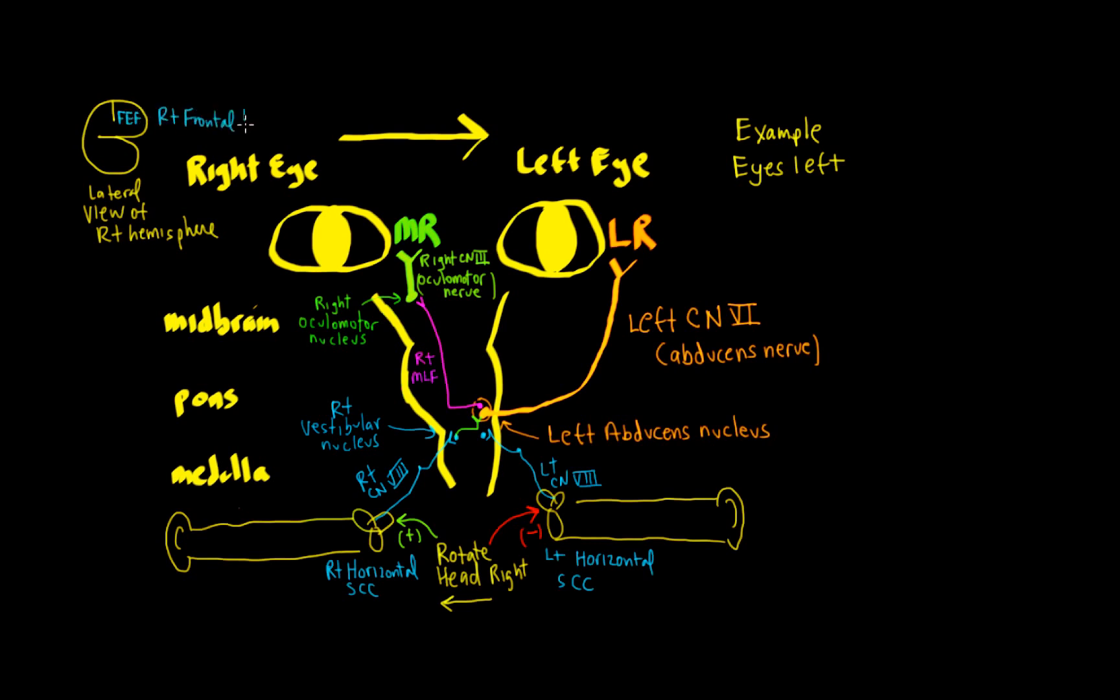And that is going to send down signals, and this is going to be in the right frontal lobe, down, cross somewhere above the brainstem, and then contact the contralateral PPRF. And that's how that would work.